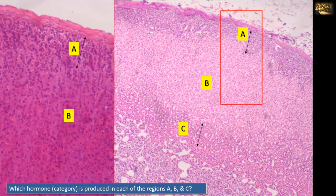Which hormone category is produced in each of the regions A, B, and C? This is again a section of the adrenal gland. Layers A, B, and C are the three histological zones of the adrenal cortex. From the surface inwards, they can be remembered by the mnemonic GFR, which also stands for glomerular filtration rate.